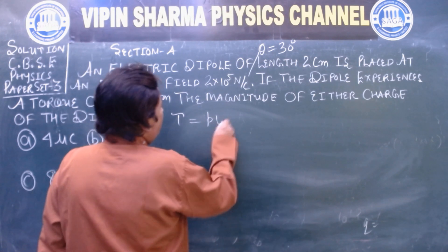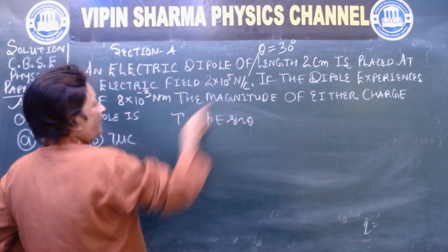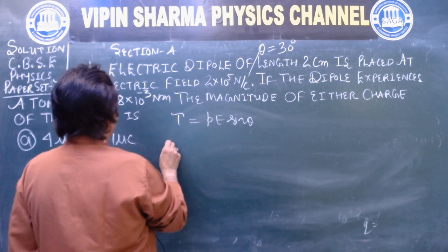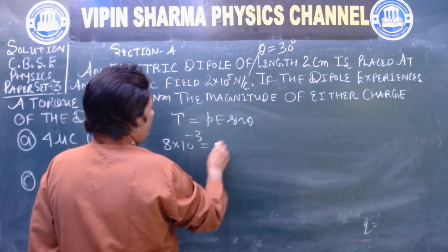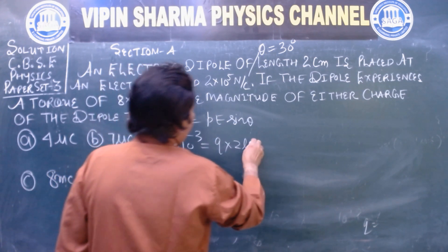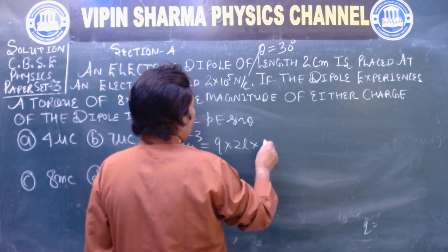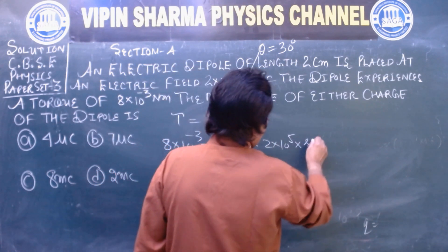See, torque is equal to PE sine theta. Torque is given to us: 8 × 10^-3. PE is what? Q into the length 2L into E, that is the electric field 2 × 10^5. Theta is sine 30.